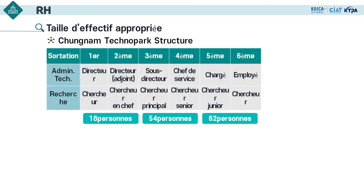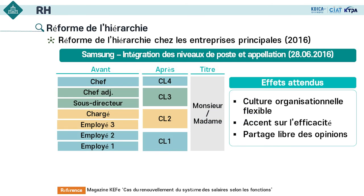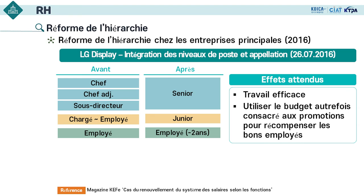Nous avons au total six niveaux dans la hiérarchie des postes, du plus élevé au plus bas pour les nouvelles recrues. Les principales entreprises du pays ont une hiérarchie différente de la nôtre. Avant la réforme, Samsung Electronics avait environ sept niveaux, mais après la réforme Carrier Level, le niveau de carrière est simplifié de 1 à 4, établissant une culture organisationnelle flexible. C'est pareil pour LG Display : de la hiérarchie multi-étapes à la simplification.